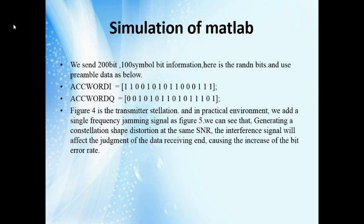For the MATLAB simulation, we send 200 bytes and 100 sample bytes of information — random bytes using permuted data. Figure 4 on the next page is the transmitter simulation. In a practical environment, we add a single frequency jamming signal, as shown in figure 5 on the next page. We can see that it generates a constellation shape distortion; at the same SNR, the interference signal will affect the adjustment of data receiving, causing an increase in the bit error rate.